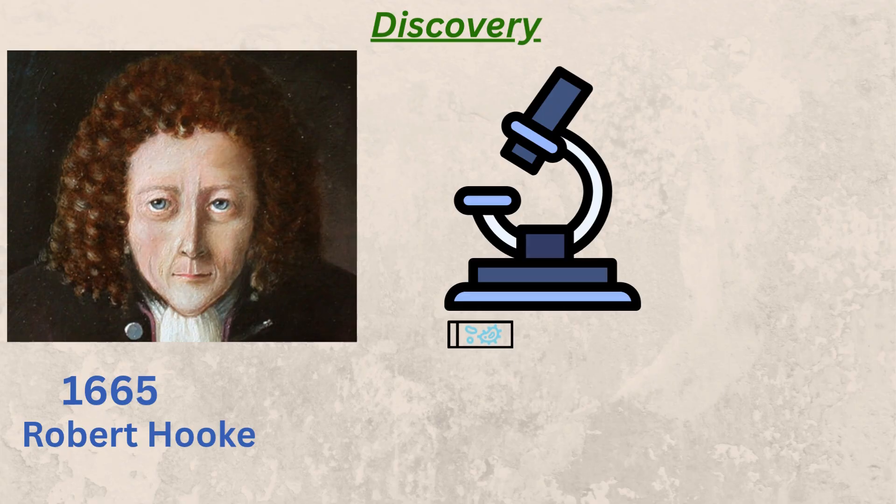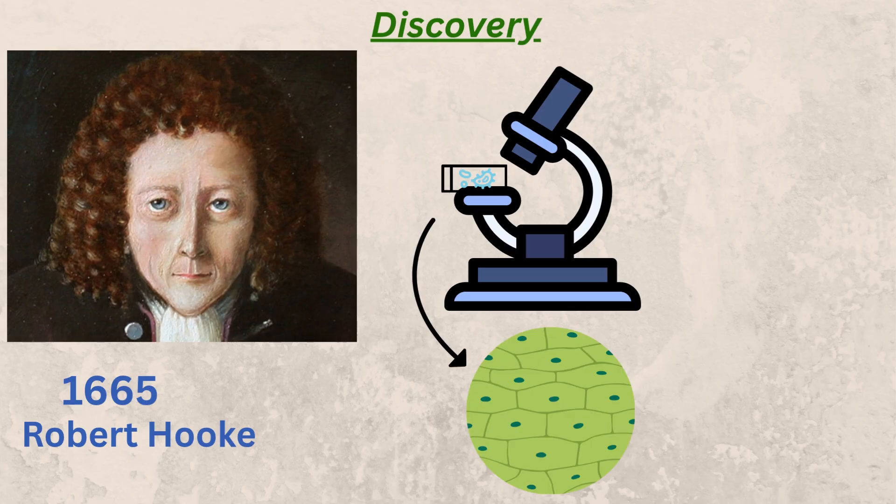He picked up a piece of cork, just the dried bark of a tree. He sliced it very thin and placed it under his microscope. He saw tiny box-like compartments, hundreds of them. They were empty, like small hollow boxes. He gave them the name cells.